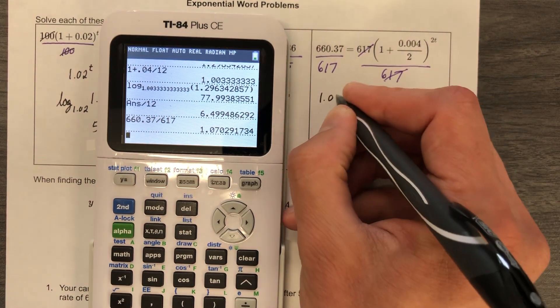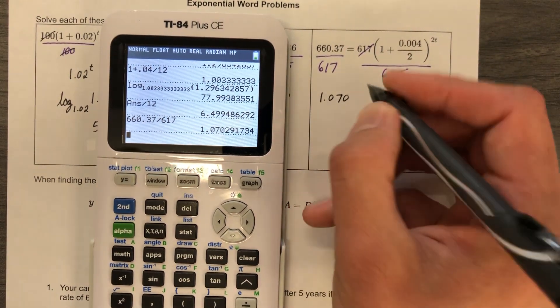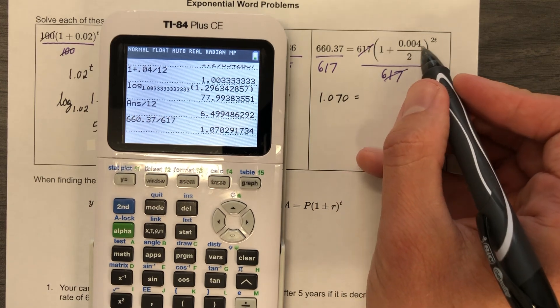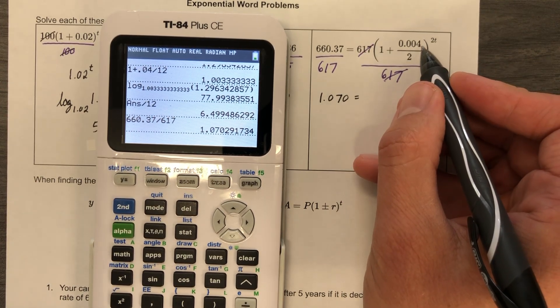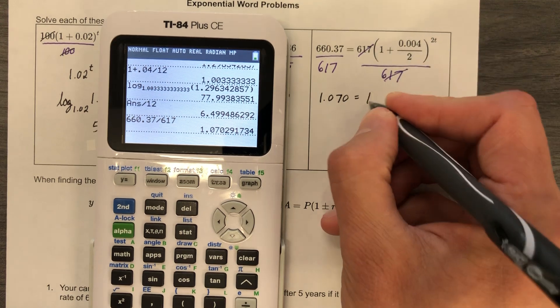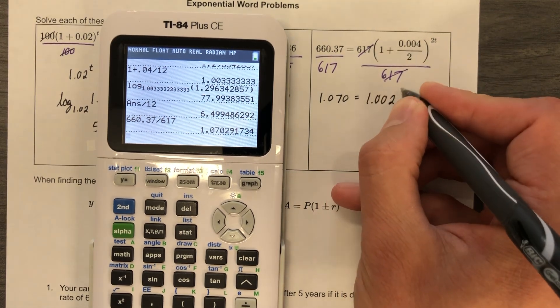I'm not going to write the whole thing. 1.070 because I feel like it, and then 1 plus 0.004 divided by 2. 0.004 divided by 2 is 0.002. 1 plus 0.002 is 1.002. Raise it to the 2t.